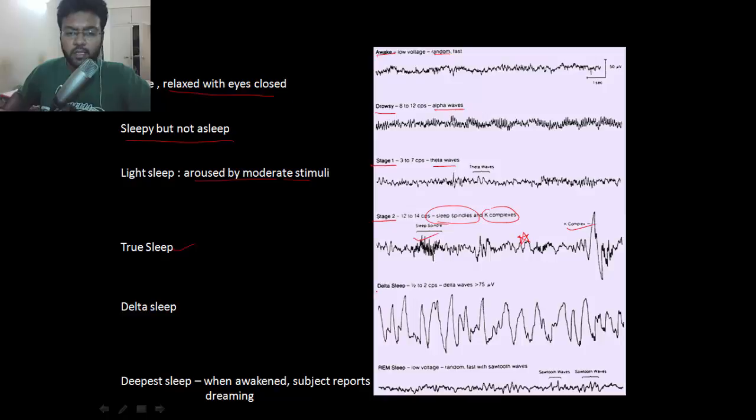In stage 3 of sleep, this is also called delta sleep, you'll find high voltage delta waves. And in the REM sleep or the deepest sleep, you'll find the waves which are normally found when the person is awake. That's why these are also called desynchronized waves or sawtooth waves.